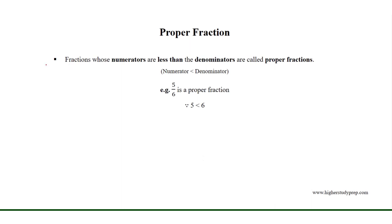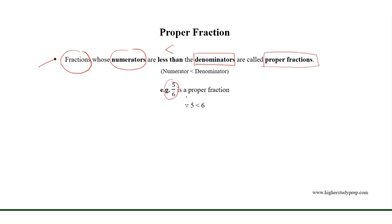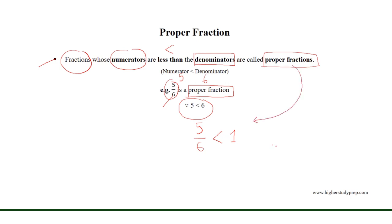Proper fraction. Fractions whose numerators are less than the denominators are called proper fractions. For example, 5 over 6 is a proper fraction, where the numerator 5 is less than the denominator 6. Therefore, 5 over 6 is less than 1. Thus, the values of proper fractions are less than 1.